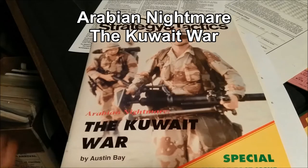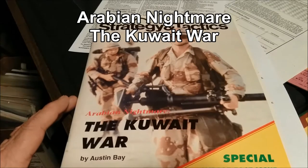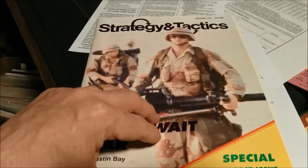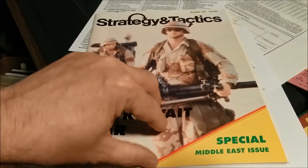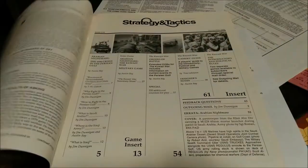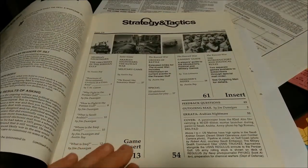Hi and welcome back. Today we're going to be looking at Strategy and Tactics 139, Arabian Nightmare of the Kuwaiti War by Austin Bay. This is a special Middle East issue. It's produced by 3W in November of 1990.